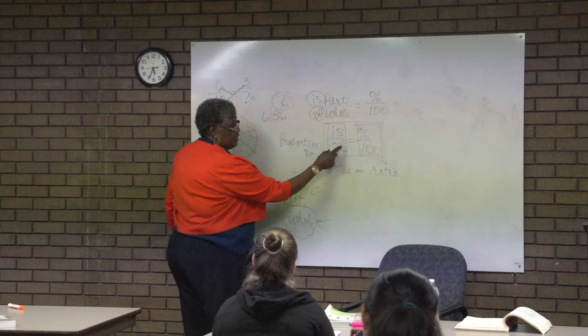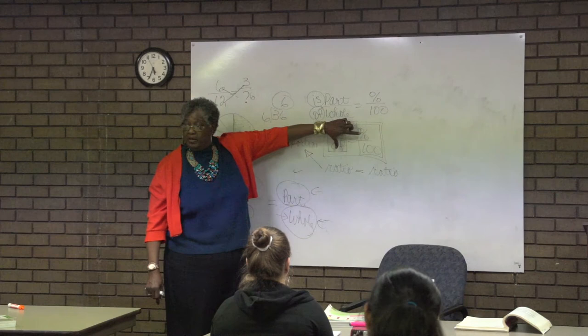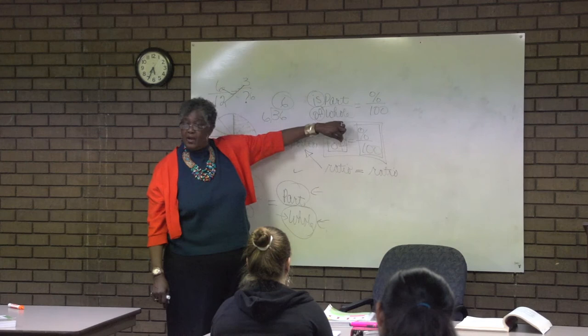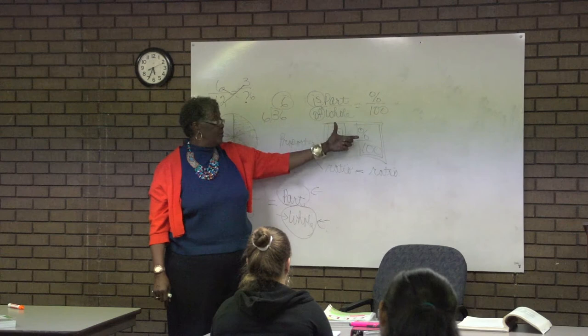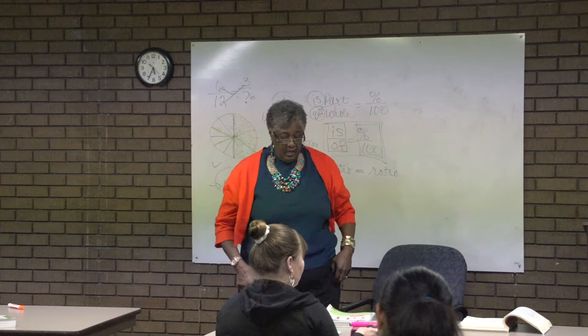Because with percent, once you set up this proportion and get the numbers in the right place, there's going to be either these two will be here or these two will be here. So once I multiply these two, I know what these two have to equal, or if I multiply these two, that tells me what these two have to equal. So I can always find out the missing number. Let's look at some of those and practice doing that.